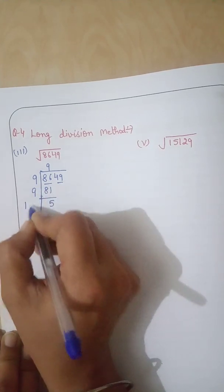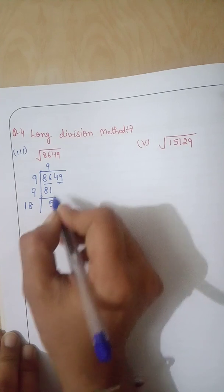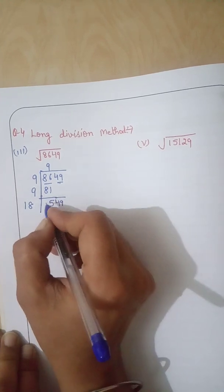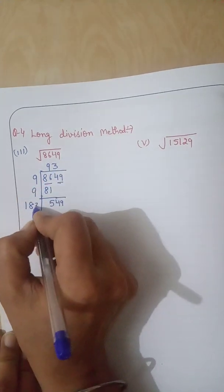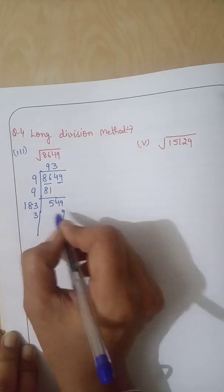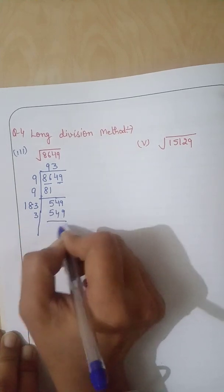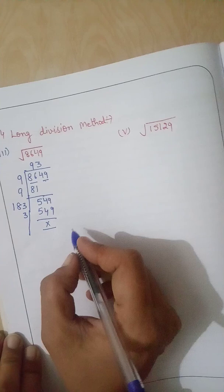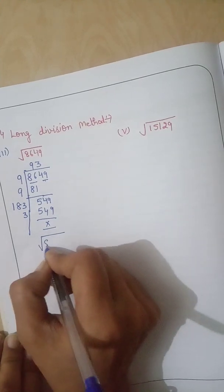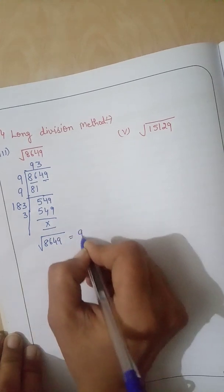9 plus 9 is 18. Then we will write a full pair, 49. Now it is divisible by 3. 18 times 3 is 54. 3 times 3 is 9, and 18 times 3 is 54. Therefore, square root of 18,649 is 93.